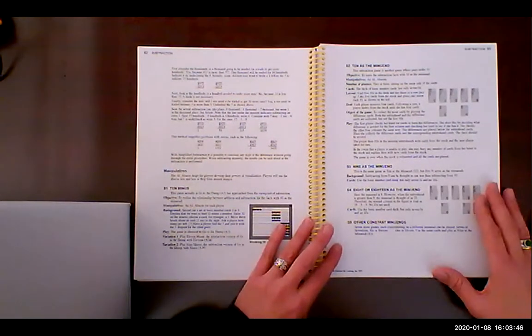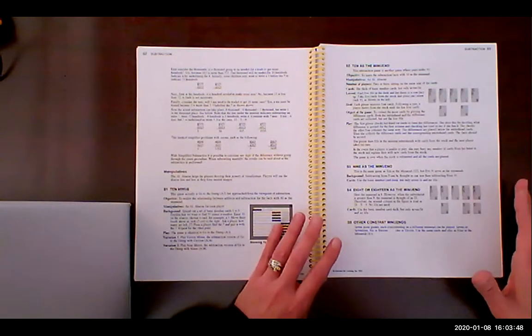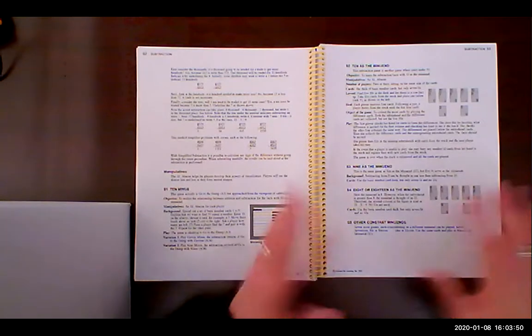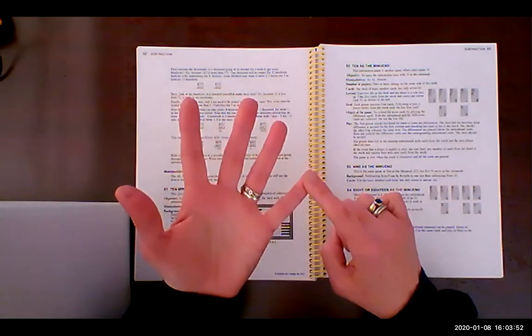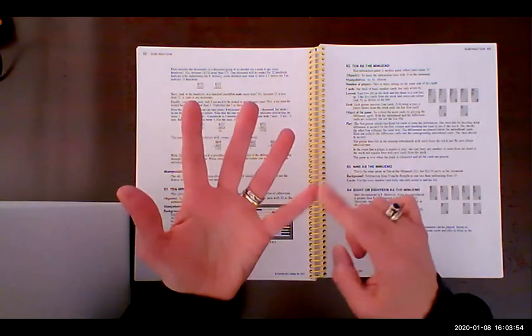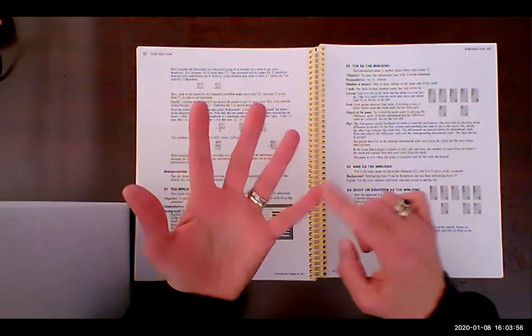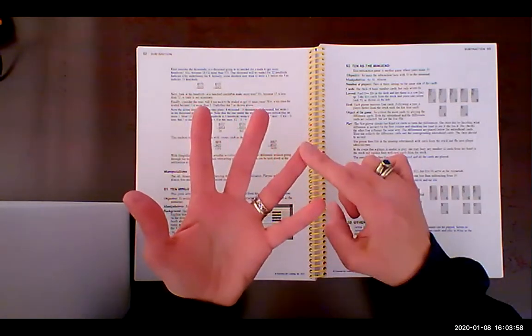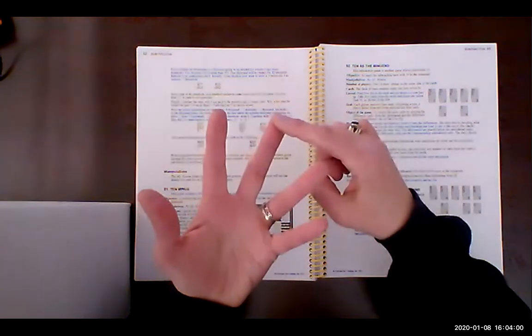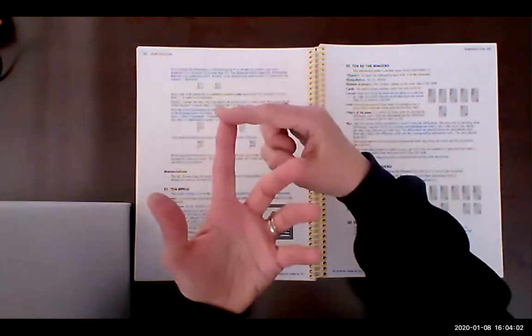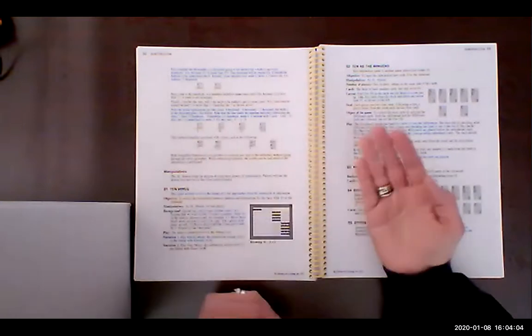Why do we have it in this order? Well, because if Dr. Cotter ran the world, which she doesn't, but if she ran the world, she would do addition first. Well, she'd start with numeration or number sense, but then addition, multiplication, come back to subtraction, and finish with division. So that's why the book is set up this way.